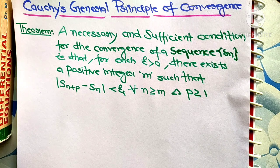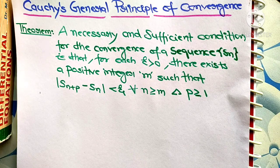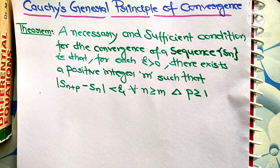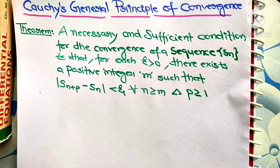Hello students, myself Preeti Divyani and today we are going to prove one important theorem: Cauchy's general principle of convergence. The theorem states a necessary and sufficient condition for the convergence of a sequence Sn — that for each epsilon greater than 0 there exists a positive integer m such that |Sn+p − Sn| < epsilon for all n ≥ m and p ≥ 1.